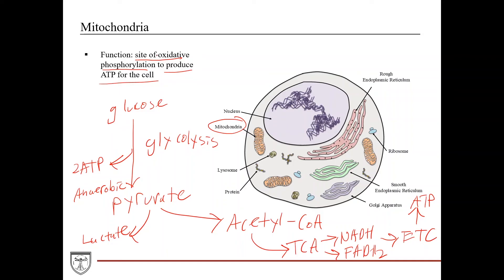That's a simplistic diagram just to illustrate the major concepts. Oxidative phosphorylation is what occurs within the mitochondria, though there are other functions that occur there as well, but these are the major ones.